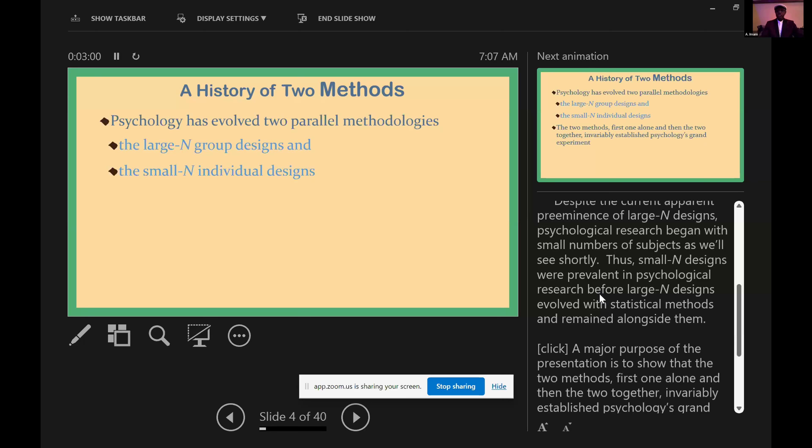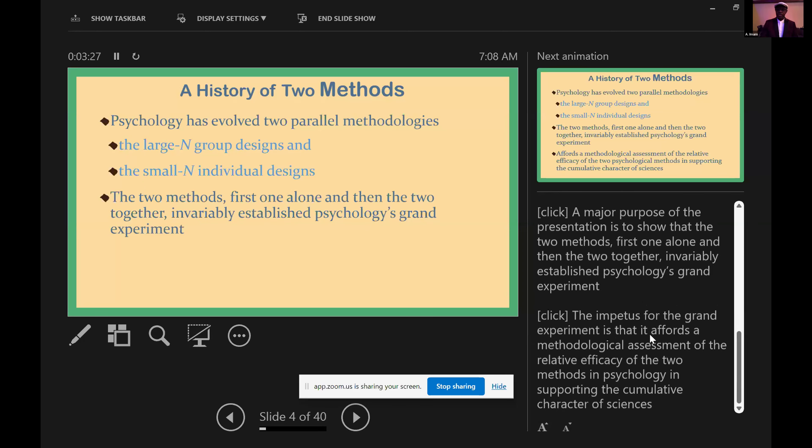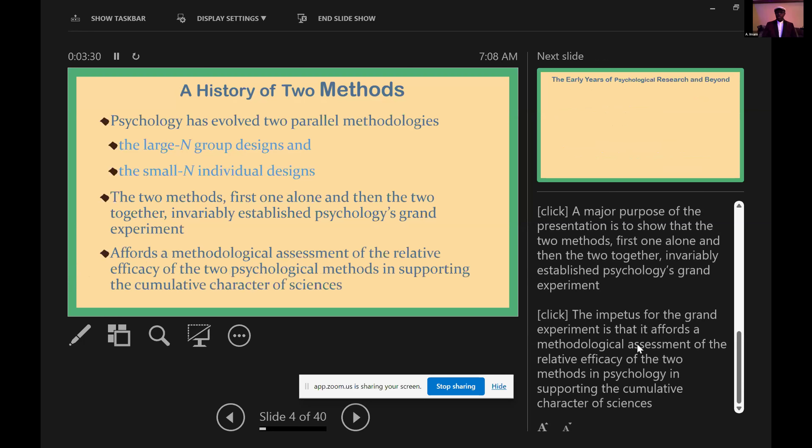Those small-N designs were prevalent in psychological research before large-N designs evolved with statistical methods and remained alongside them. A major purpose of the presentation here is to show that the two methods, first one alone and then the two together, invariably establish psychology's grand experiment. The impetus for the grand experiment is that it affords a methodological assessment of the relative efficacy of the two methods in psychology in supporting the cumulative character of the sciences.